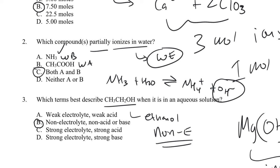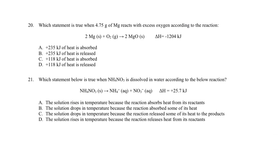For molecular compounds, the ones that are electrolytes are really just the acids: weak acids as weak electrolytes, strong acids as strong electrolytes, and NH3 as a weak electrolyte. Any other formula you know dissolves in water — glucose, sucrose, other alcohols — those are non-electrolytes.